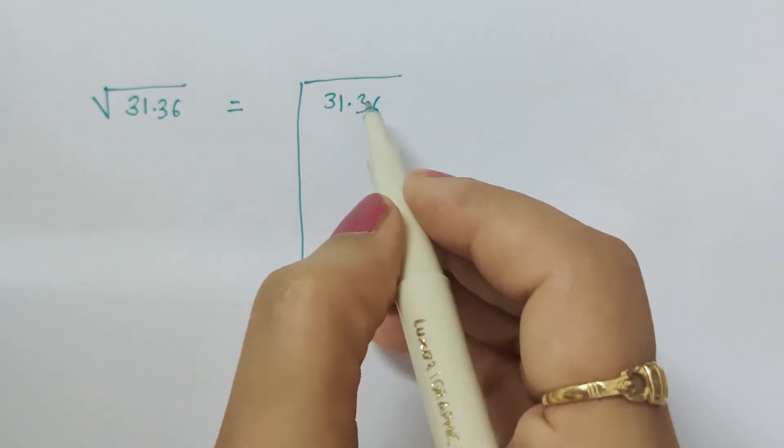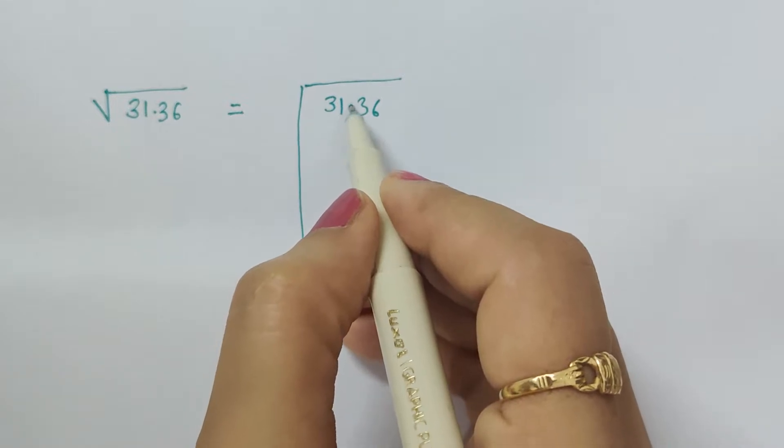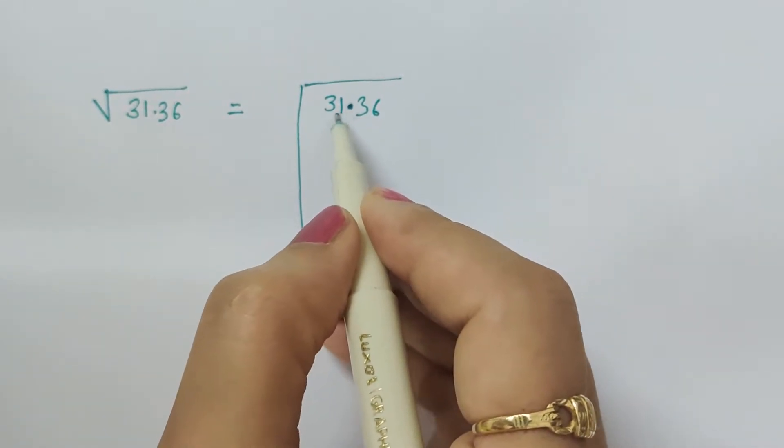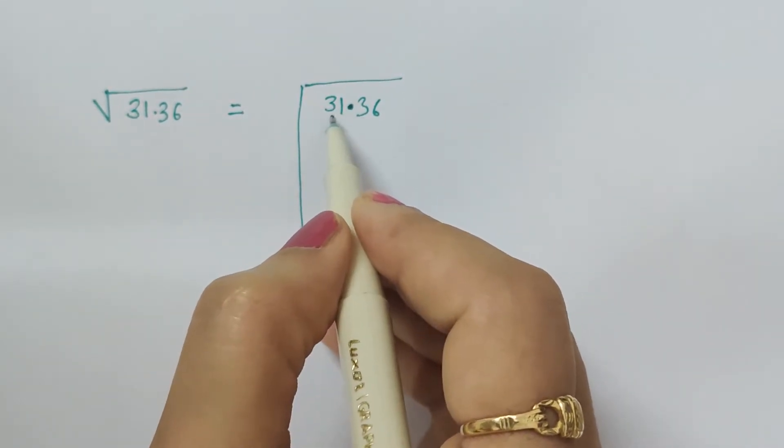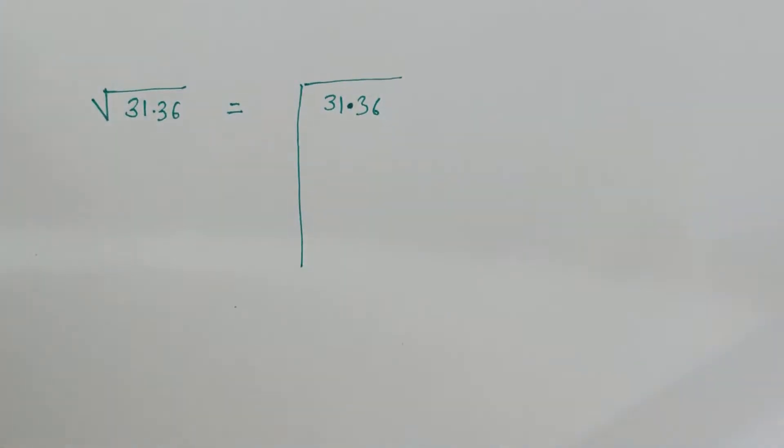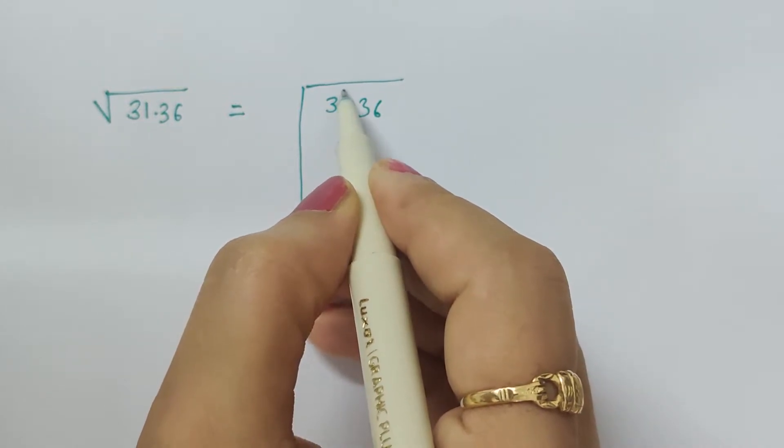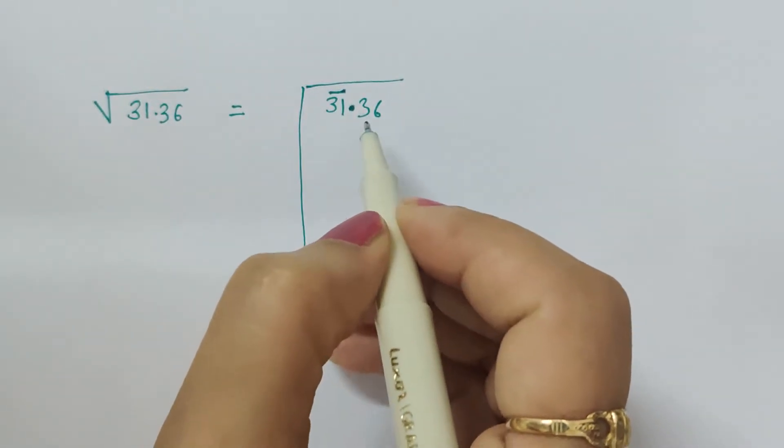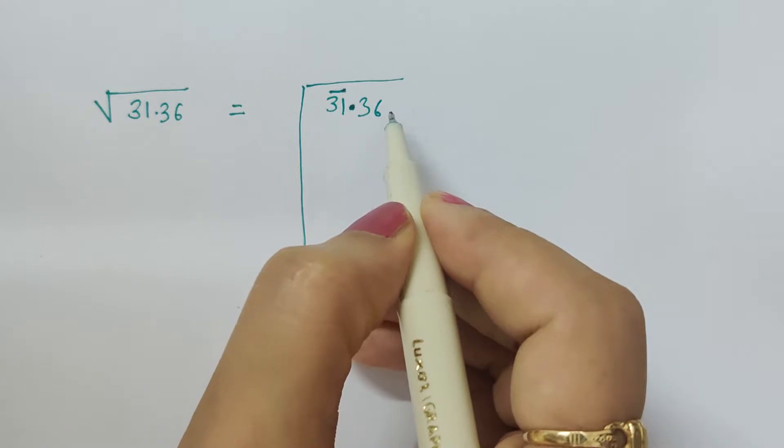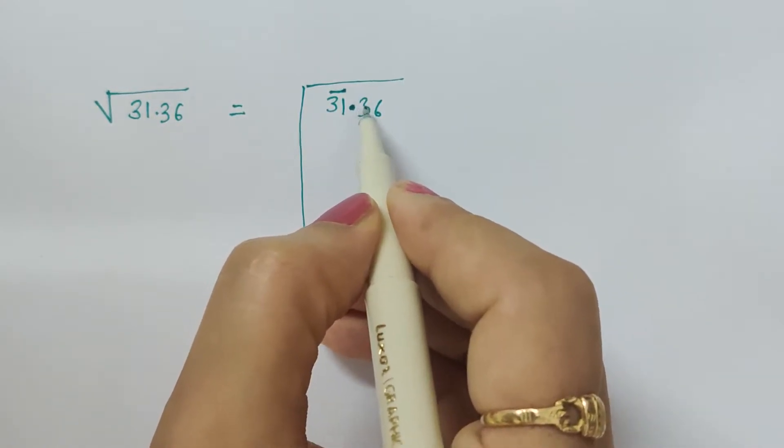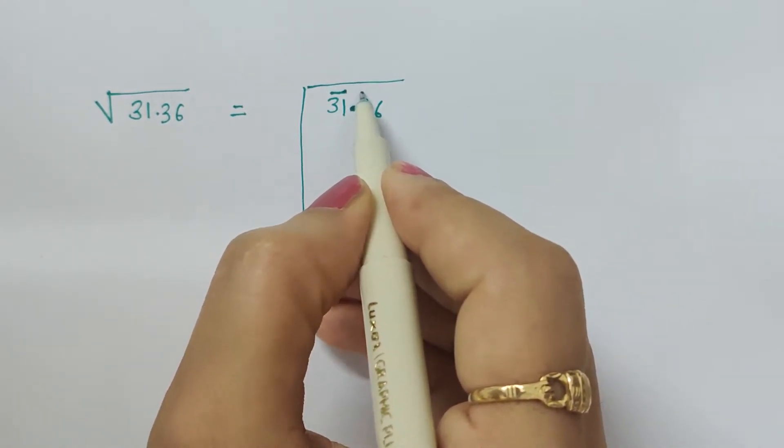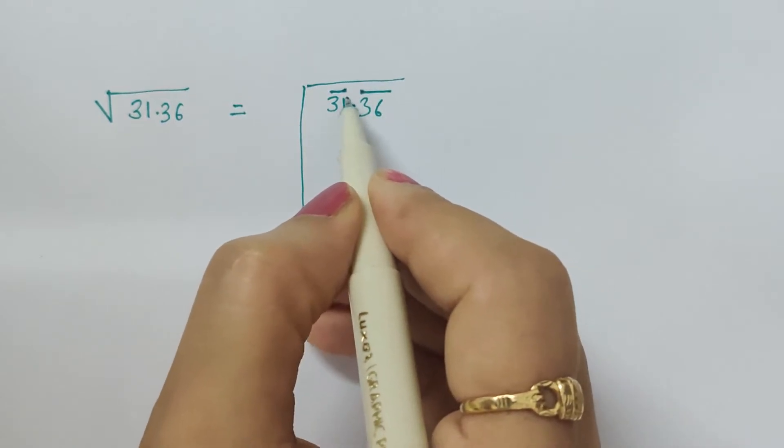Just like the previous explanation, we have to write 31.36 here and then start pairing. In the decimal case, for the number before the decimal, we have to start putting the bar from the unit digit place. After the decimal digits, from the beginning itself we have to start putting the bar.